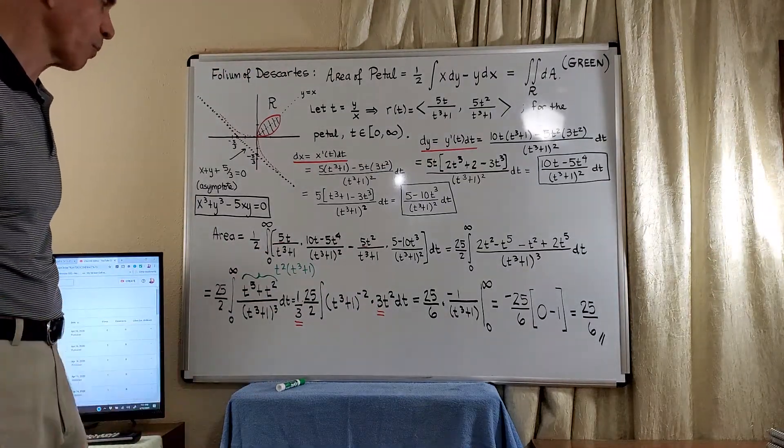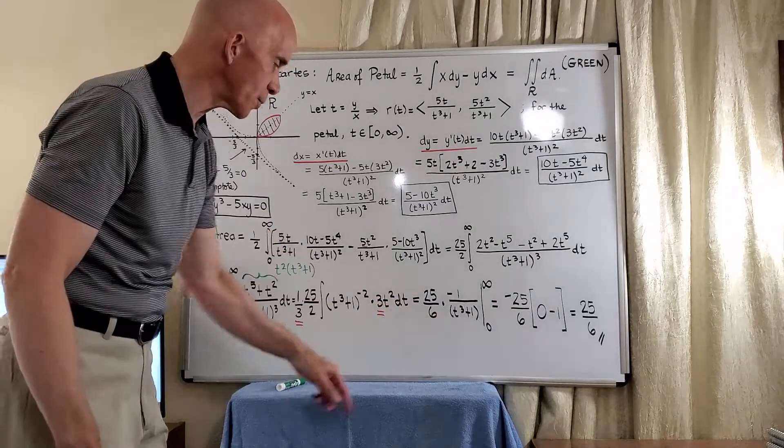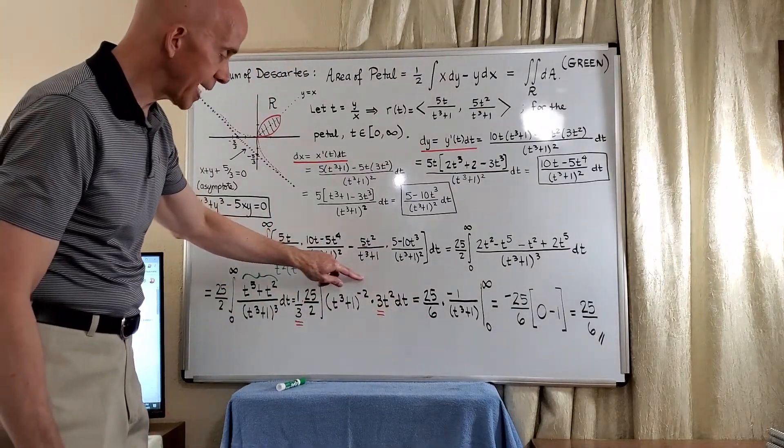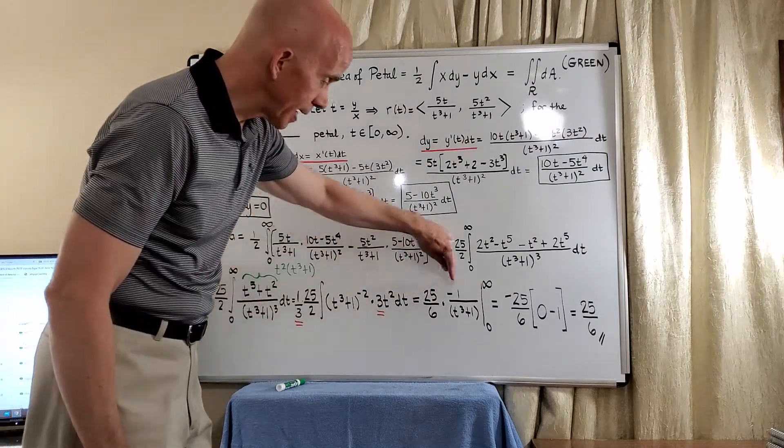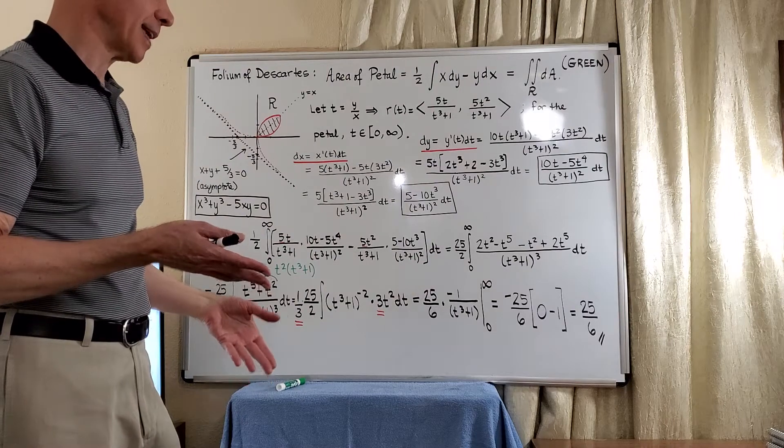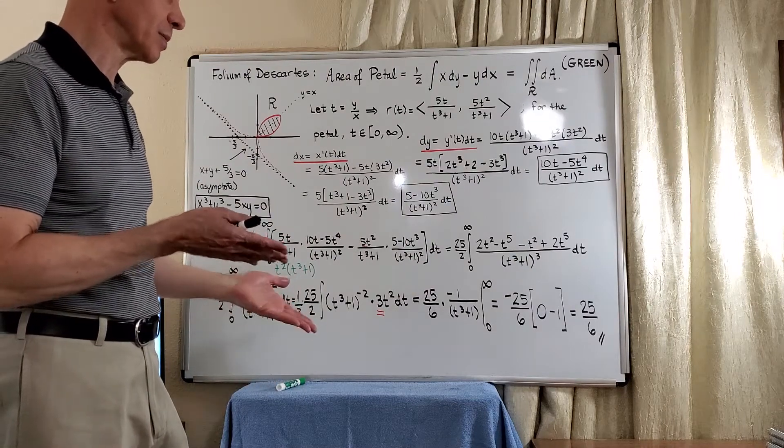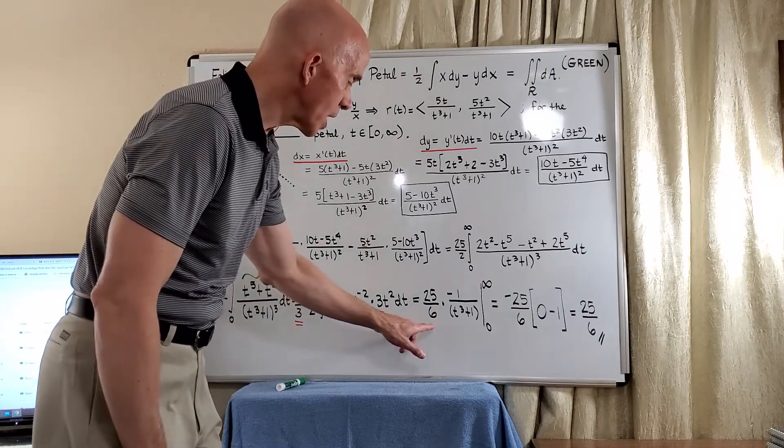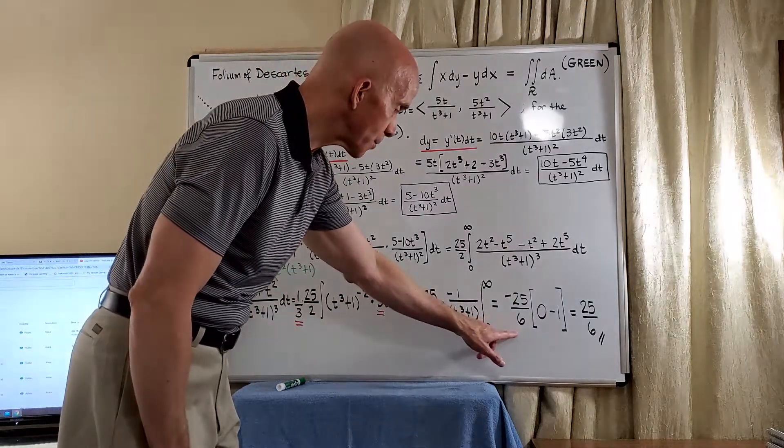This is table ready. So notice this will give us 25 over 6. Add 1, divide by the new power, but the new power is negative 1, so when we divide by negative 1, we just have a negative 1 here. We're going to do the cheap improper integral evaluation. We'll factor the negative 25 over 6.